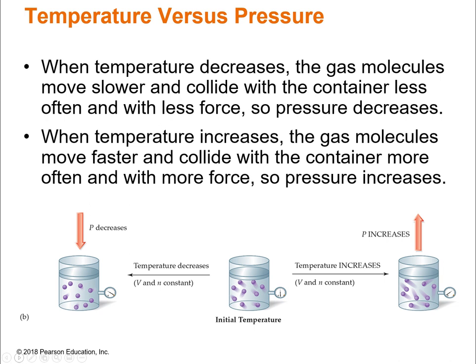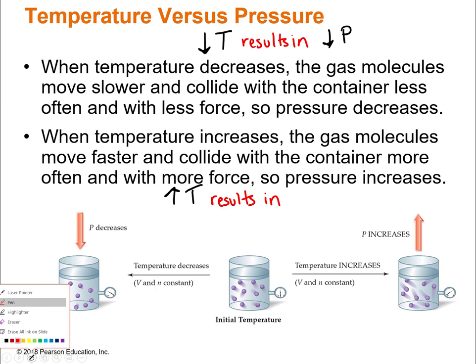Now let's look at temperature versus pressure. When you decrease the temperature, the gas molecules are moving around more slowly, meaning they collide with the container less often and with less force because they don't have as much energy — so you decrease the pressure. The opposite is also true: if you increase the temperature, the gas molecules have more kinetic energy, they move faster, collide with the container more often and with more force, resulting in an increase in pressure.